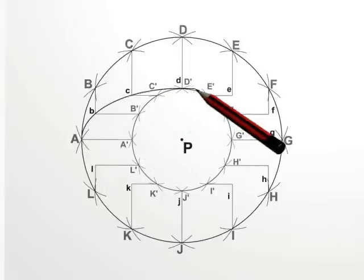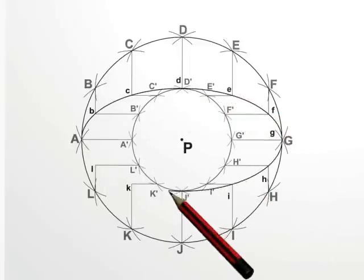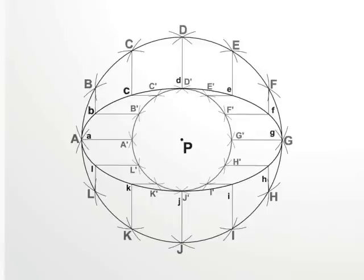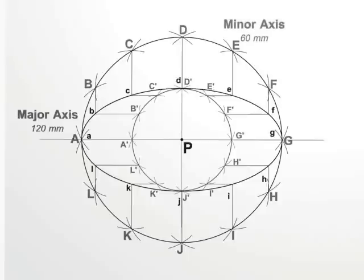Draw a smooth curve sequentially passing through these intersecting points A, B, C, D, E, F, G, H, I, J, K, L and back to A. So this is the required ellipse with 120 mm major axis and 60 mm minor axis.